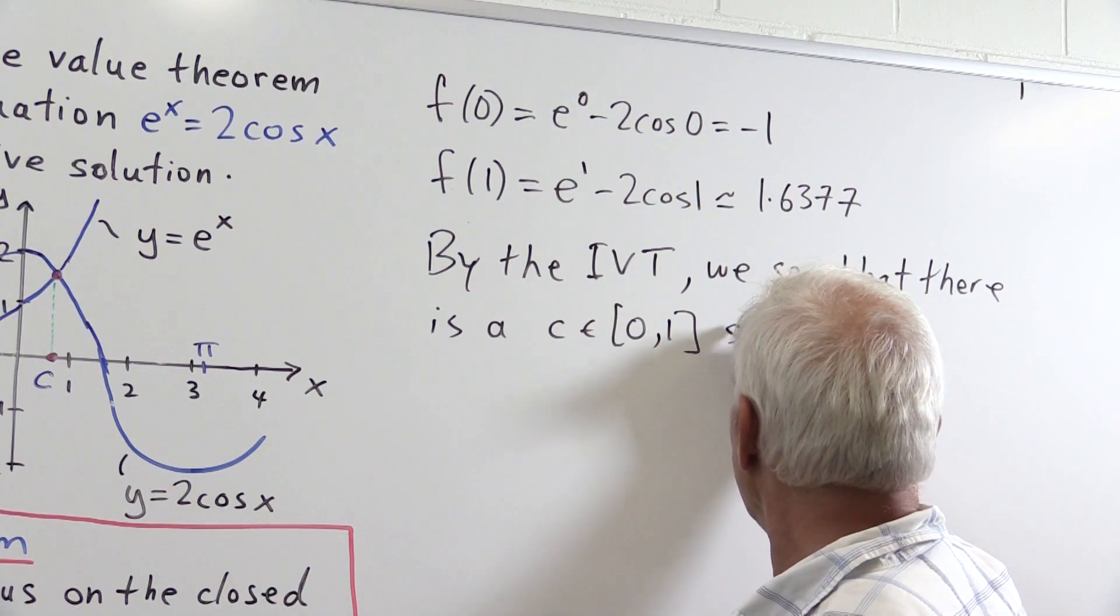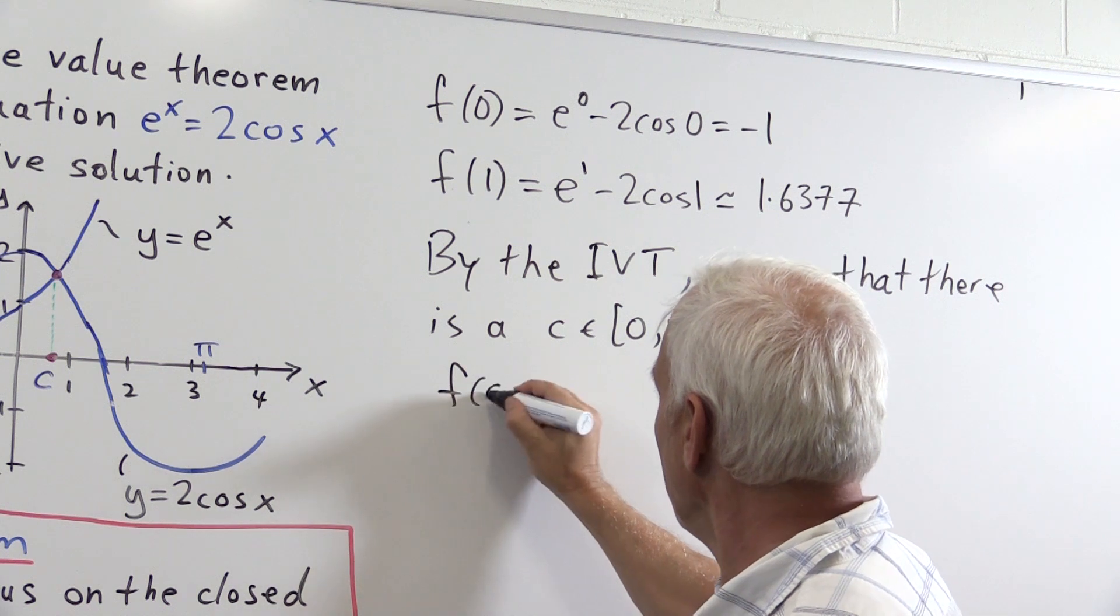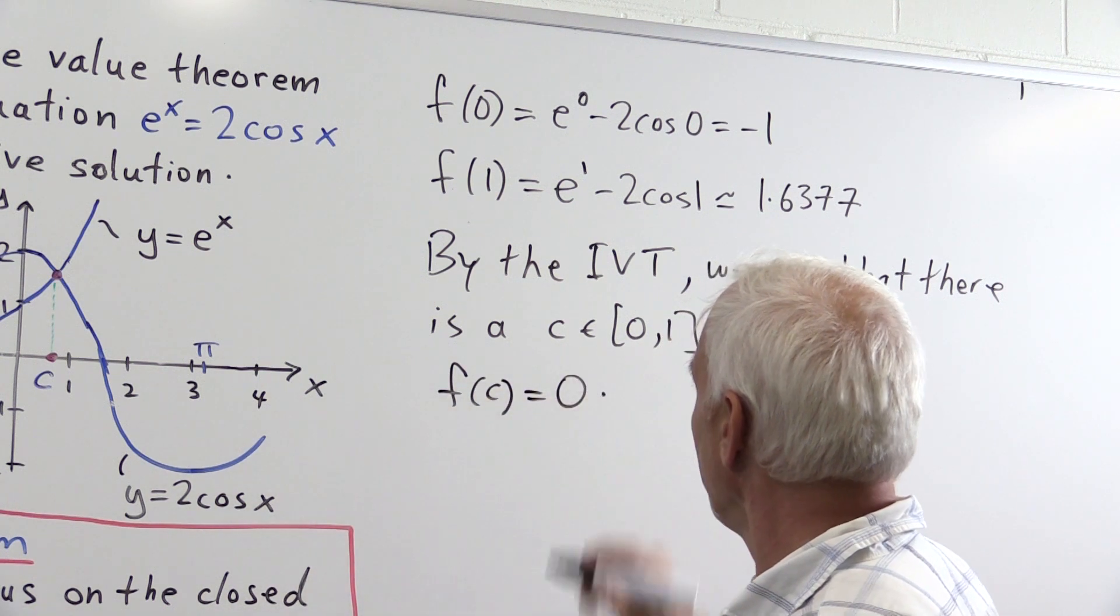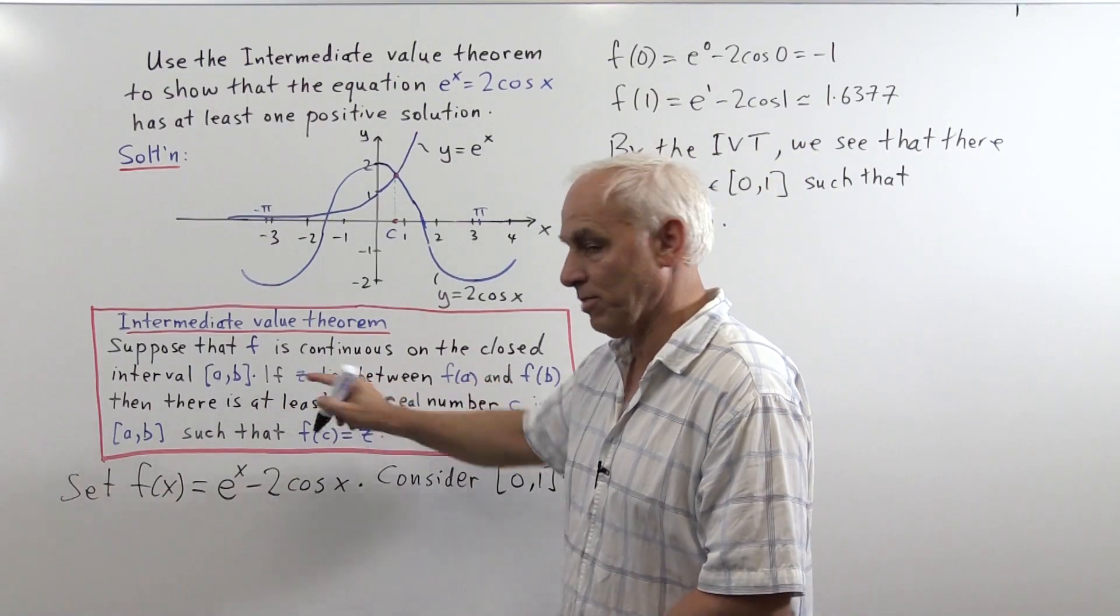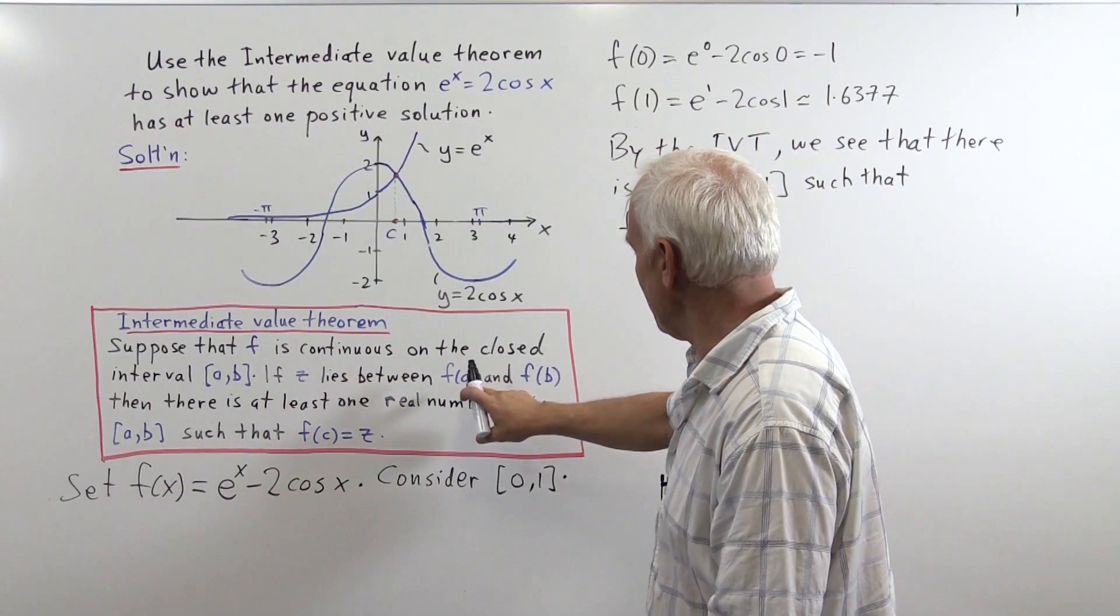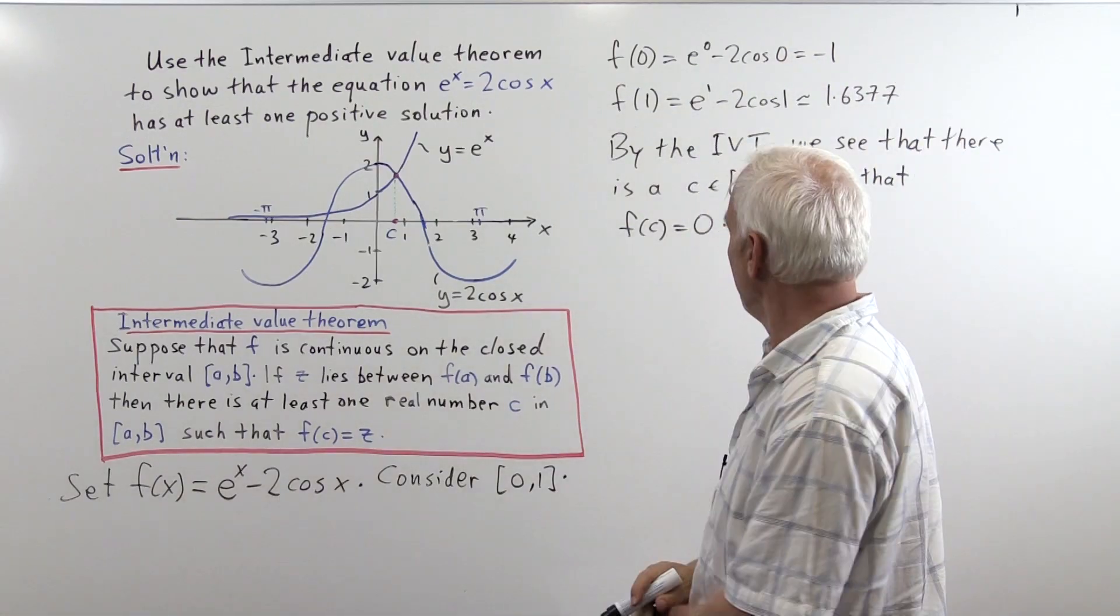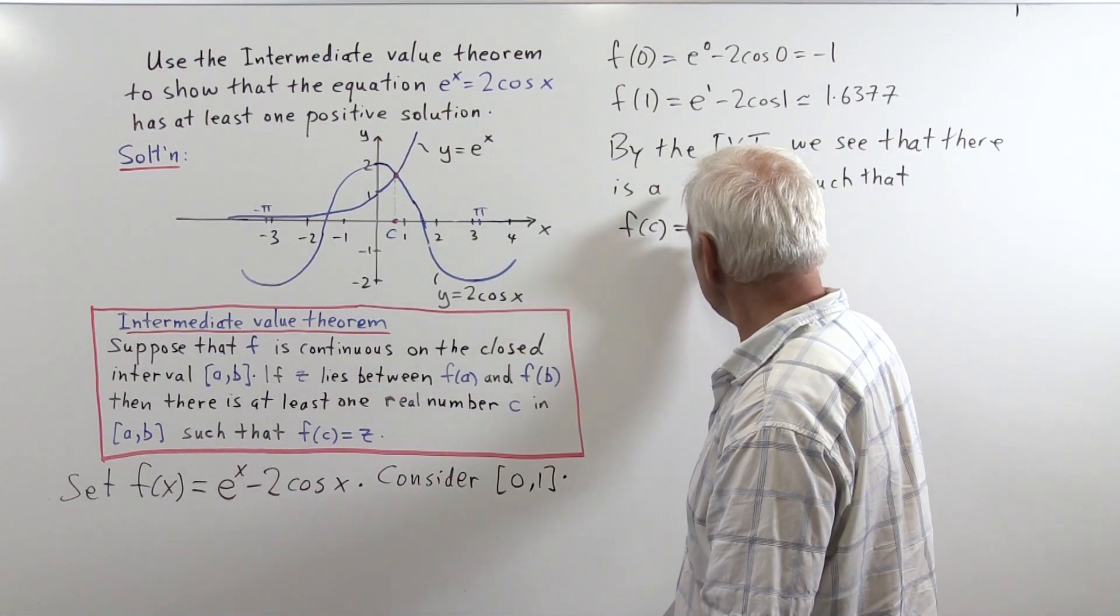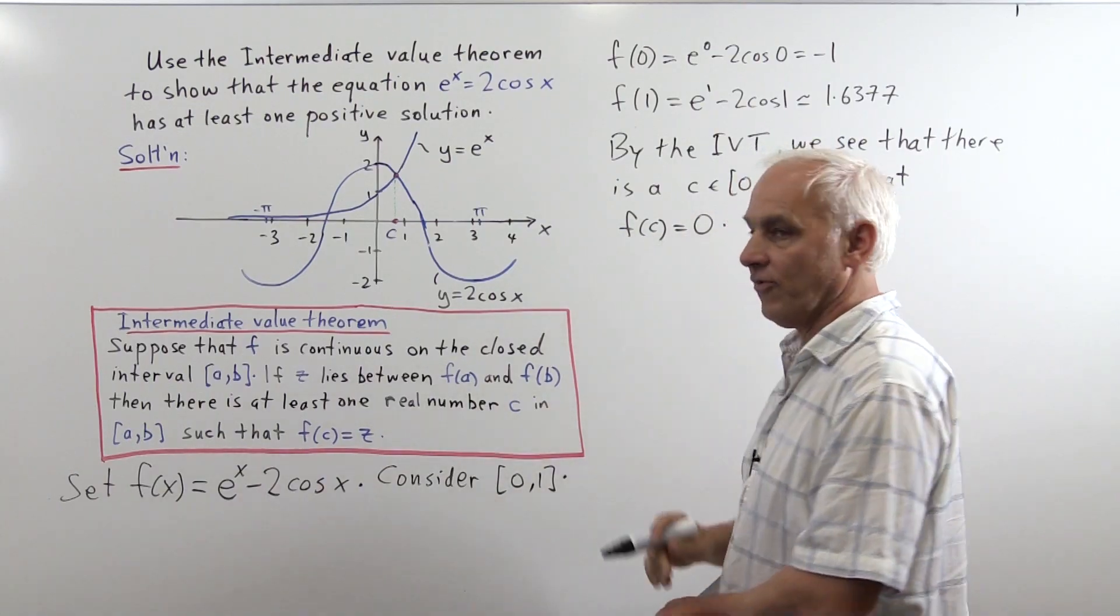Such that f(c) = 0. Because the value 0, which is playing the role of z here, is between f(a) and f(b) - in other words, between f(0) and f(1) - then there's some value c in the interval [0, 1] for which f(c) = 0.